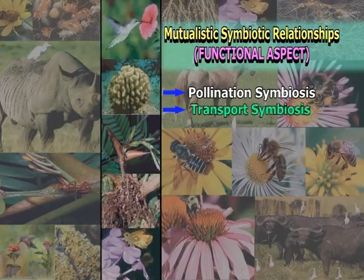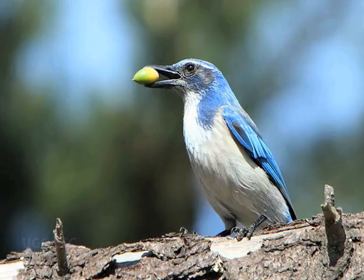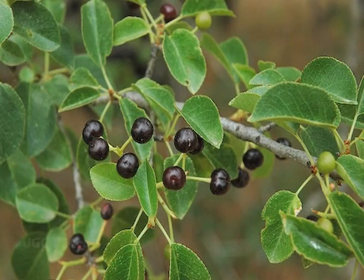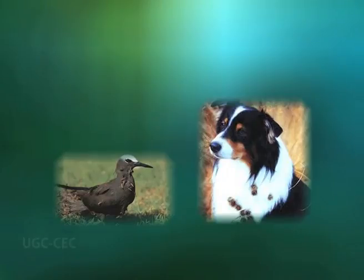The second type of mutualism is transport symbiosis. Birds and mammals are of great importance as the distributing agents of various parts of plants. Many times, seeds, fruits, or even entire plants become attached to the feathers or fur, or ingested seeds are eliminated unharmed along with the feces by animals and distributed in the environment from one place to another.